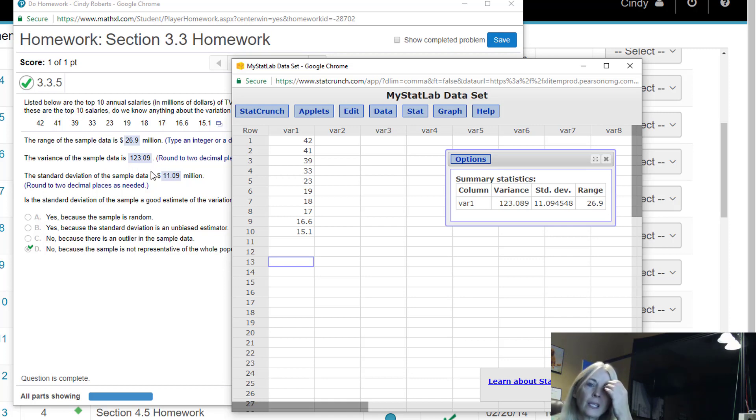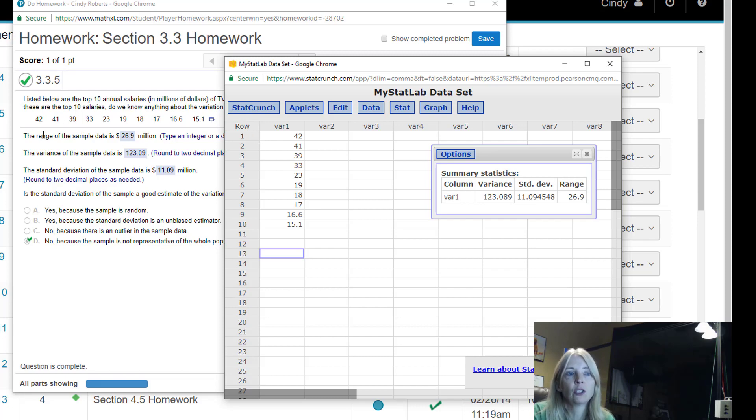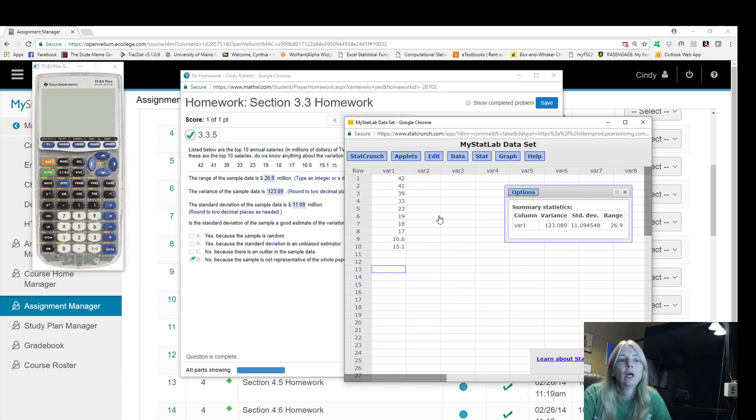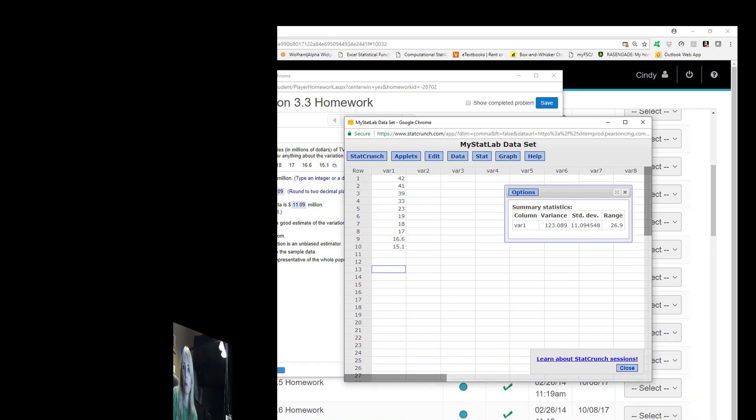The range kind of makes sense—the highest minus the lowest. The variance is the spread of the data squared. A lot of times they won't use this except in other formulas. The standard deviation is in the same unit, so this is how spread the data is, about 11 million. There's a pretty big spread even just in these 10 values. But again, the variability, the spread—those are the words I like to use a lot when talking about standard deviation. So get these technology tools down to let StatCrunch or your calculator do the work for you.